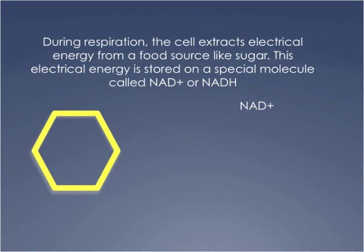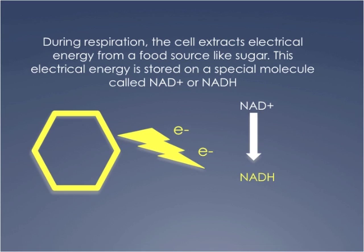This electrical energy is electrons — it's the movement of electrons. We're going to take electrons off of the sugar molecule and store them on a special molecule called NAD+, which is how your body stores electricity. This is like your body's rechargeable battery — a temporary electrical storage mechanism. NAD+ means it's empty and uncharged. When we put electrons on it, it becomes NADH. So the electrons come off glucose and are stored on NADH, which goes from an energy-depleted white form to an energy-rich yellow form.